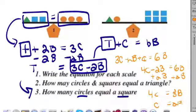I think when I wrote this, I wrote the question wrong. I said, how many circles equal a square? It should really be, how many squares equal a circle?